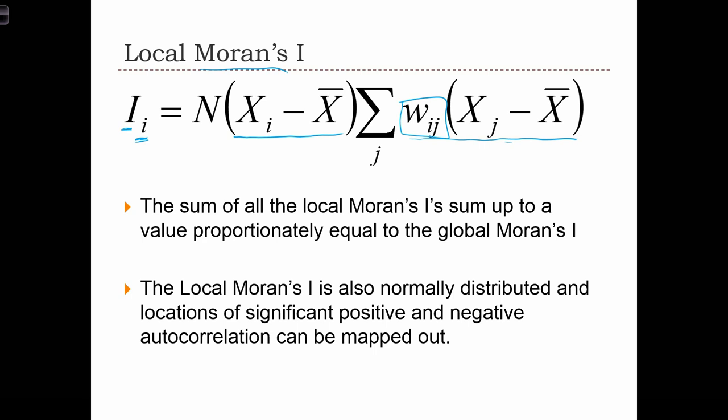The sum of all the local Moran's I's, if we summed up all of these statistics across all i's, the sum of the local Moran's I is proportionately equal to the global Moran's I. So if we take the global Moran's I that we calculate for a map, we can distribute it into little pieces all over the map that would add up to the global Moran's I.